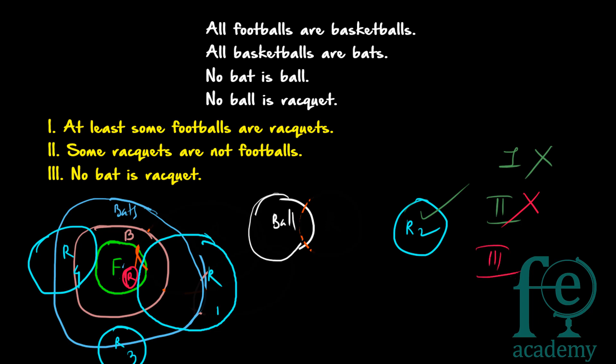Now what about the third conclusion: no bat is racket. We cannot surely tell, because there are many possibilities. The racket can overlap only with bats — in that case some bats are racket. Or racket can overlap with both basketballs and bats — in that case also some bats are racket. And if racket is fully overlapping with football, basketballs, and bats, conclusion 3 does not follow either. So conclusion 3 is also false. All three conclusions do not follow from the given statements. Thank you for watching.